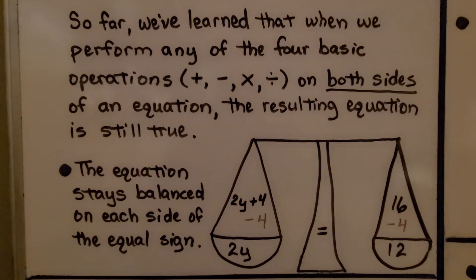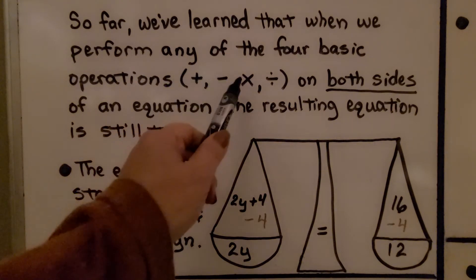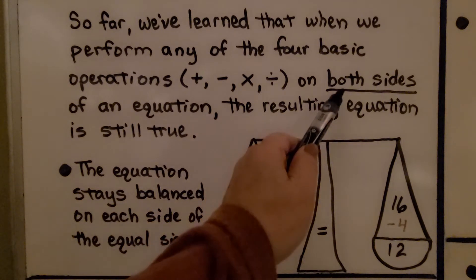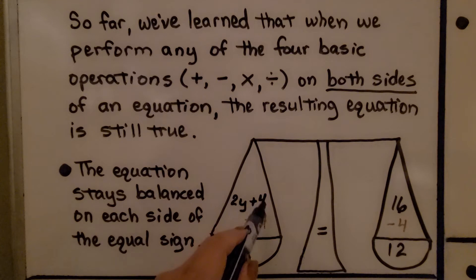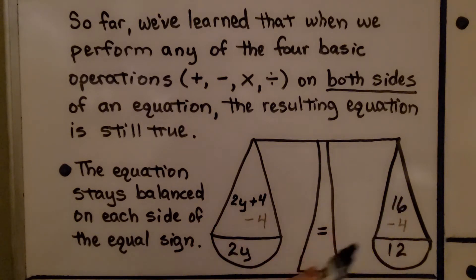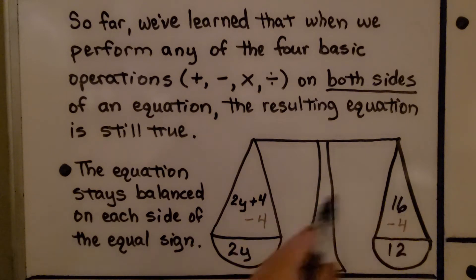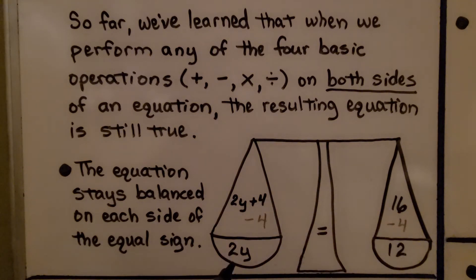So far we've learned that when we perform any of the four basic operations — add, subtract, multiply, divide — on both sides of an equation, the resulting equation is still true. The equation stays balanced on each side of the equal sign. If we have 2y plus 4 is equal to 16, if we take 4 away from each side, we're keeping it balanced. On this side we'll have 2y, and on this side we'll have 12.